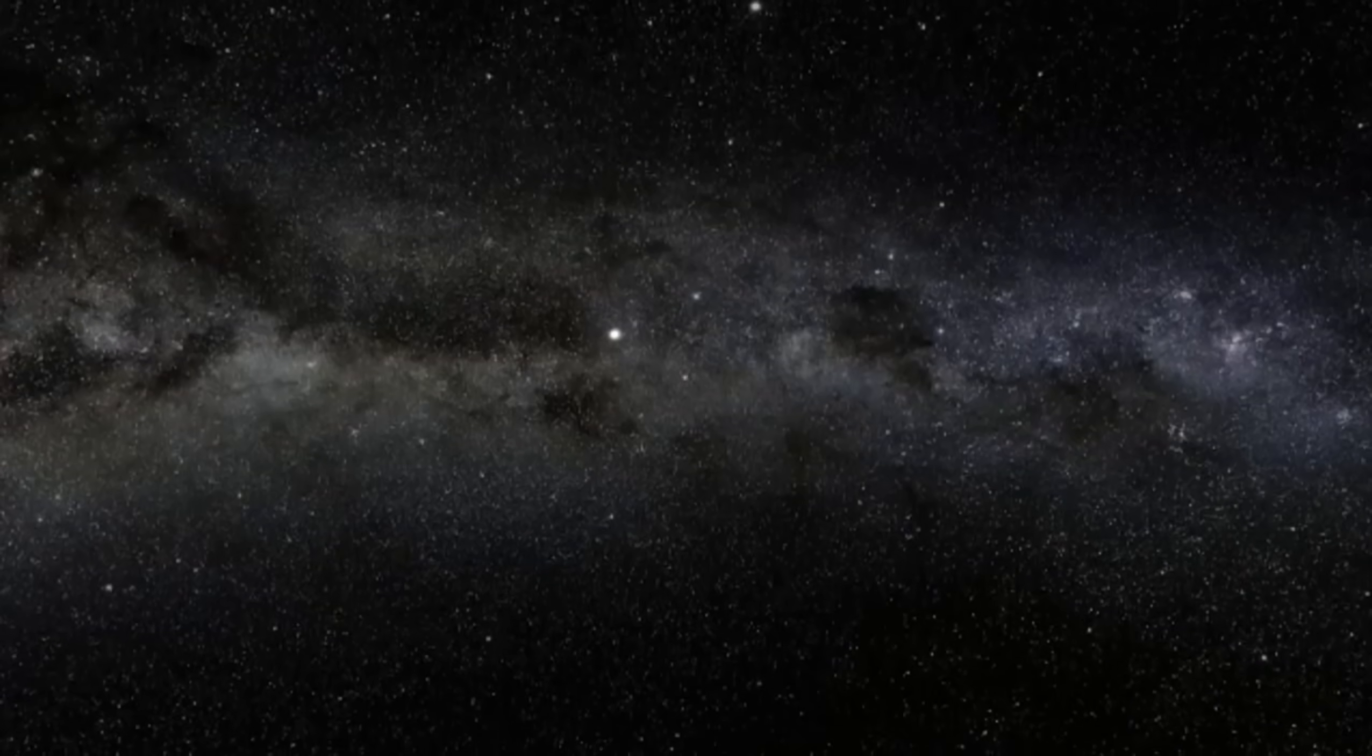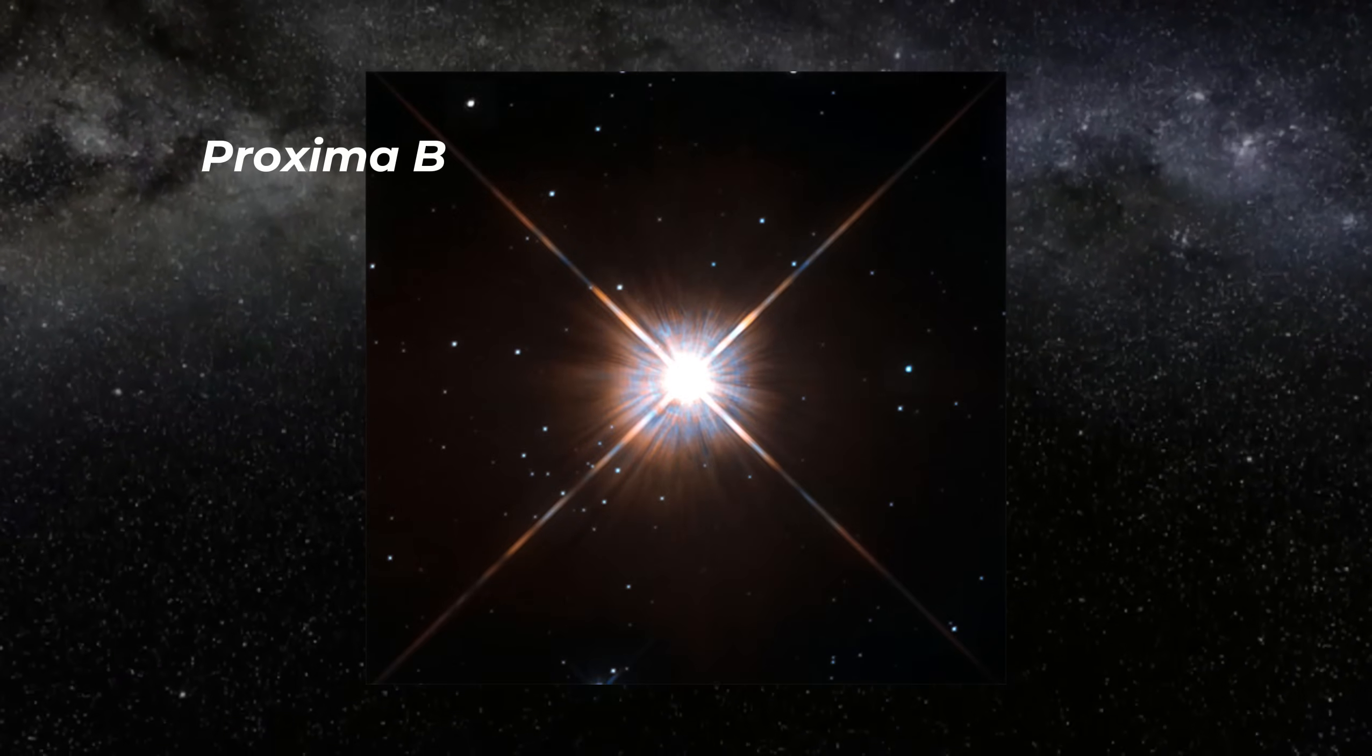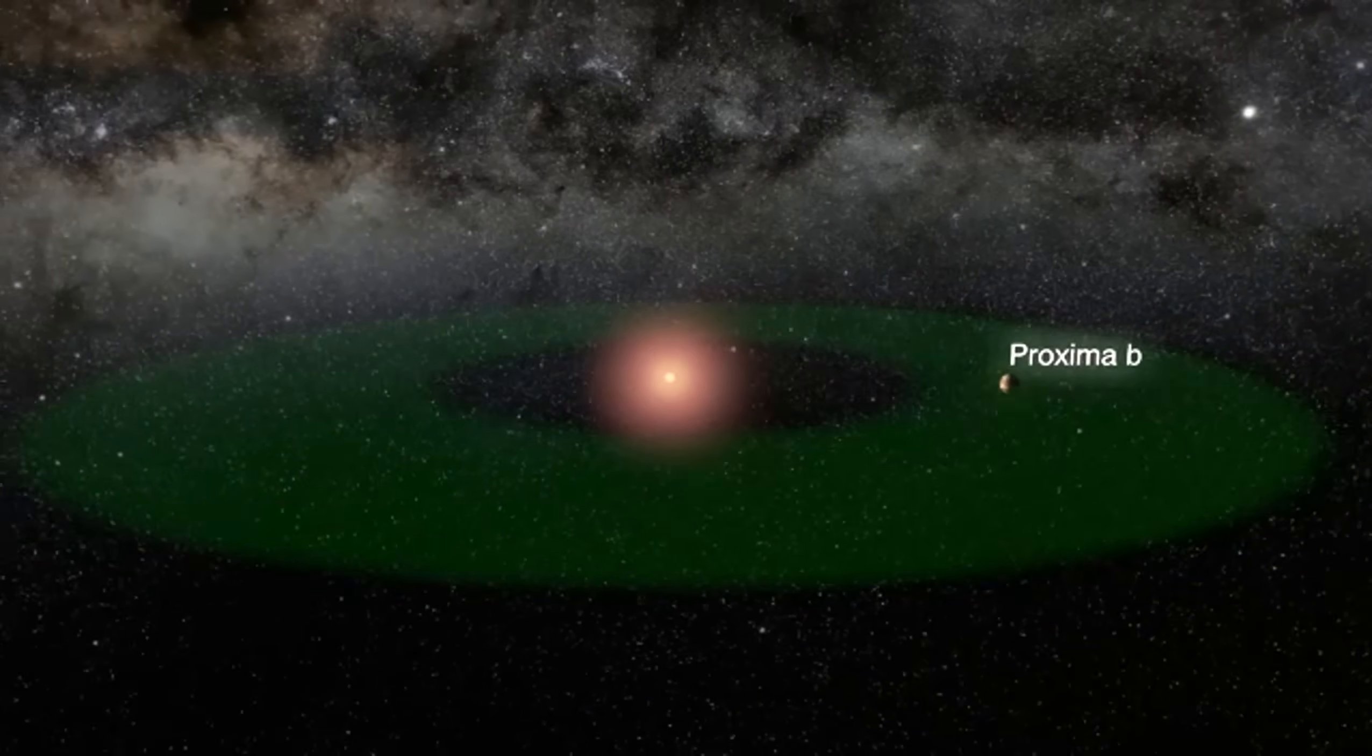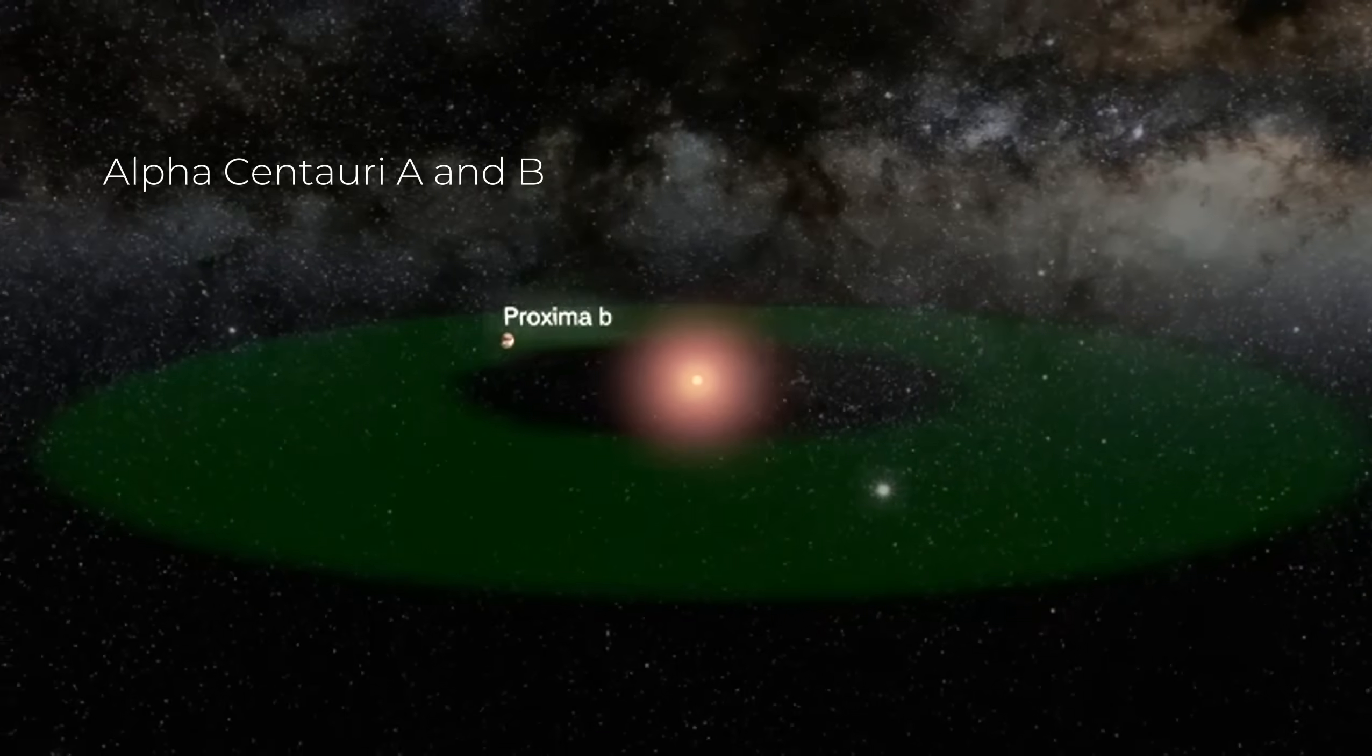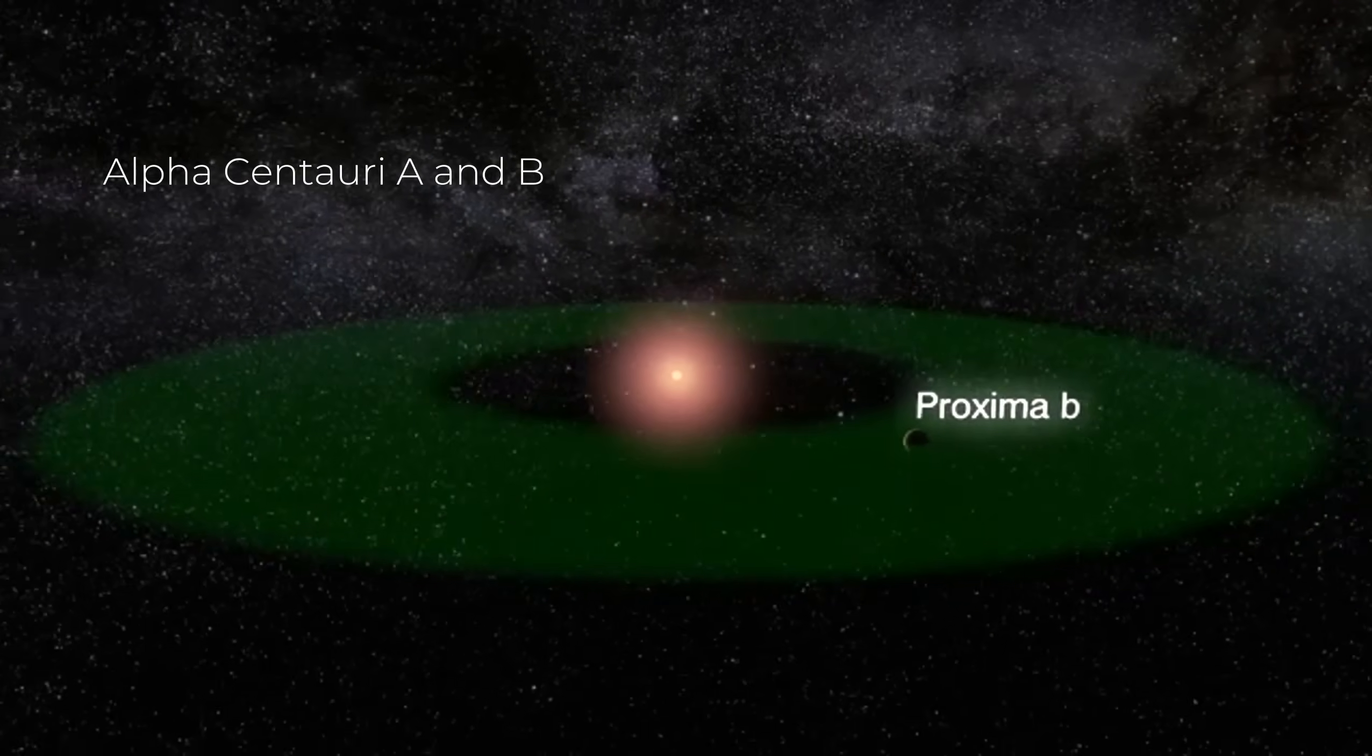That is the excitement scientists are feeling right now about a newly captured image of Proxima B. Thanks to the incredible James Webb Space Telescope, we now know this is not just some random floating rock in the universe. It is a planet, a mere four light years away, that is roughly the same size as our Earth.